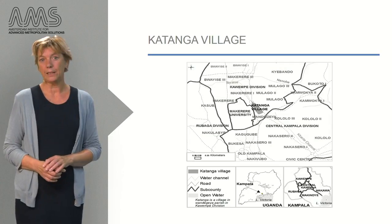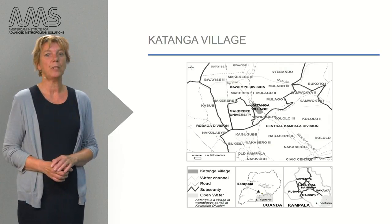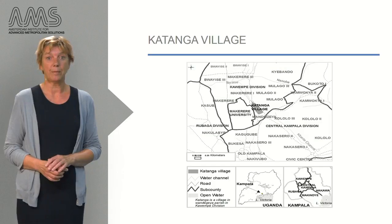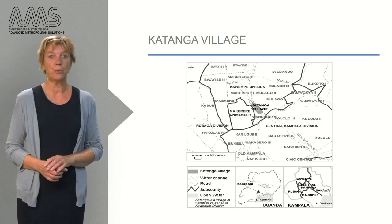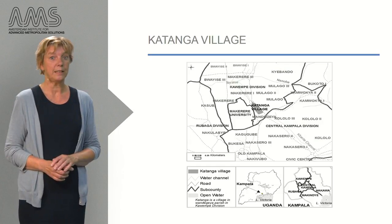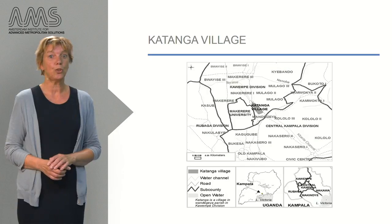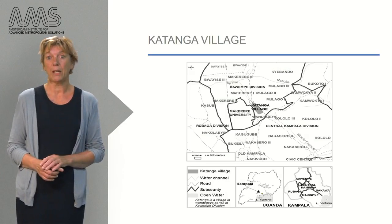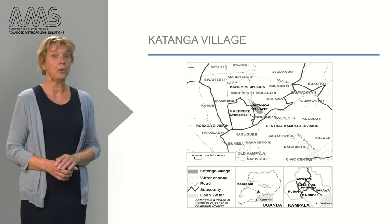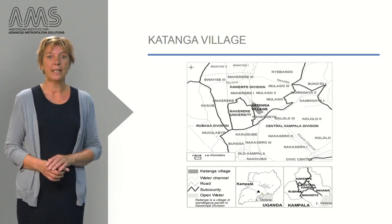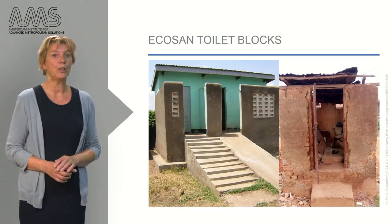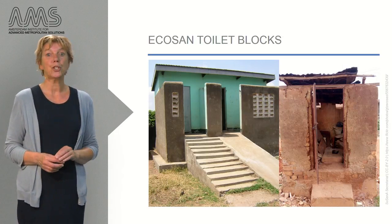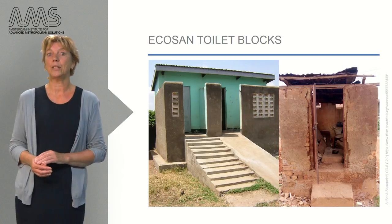An example is Katanga village, one of the informal settlements in Kampala where the urban poor are living. In Katanga, sanitation is one of the biggest health and environmental problems. To improve the sanitation facilities, technical experts decided to install several eco-sound toilet blocks in Katanga. This seems to be an attractive solution as eco-sound toilets protect public health, prevent pollution and return nutrients to the soil. Yet in Katanga slum, the eco-sound toilets are fully ignored because the potential users are convinced that these toilets are not hygienic.